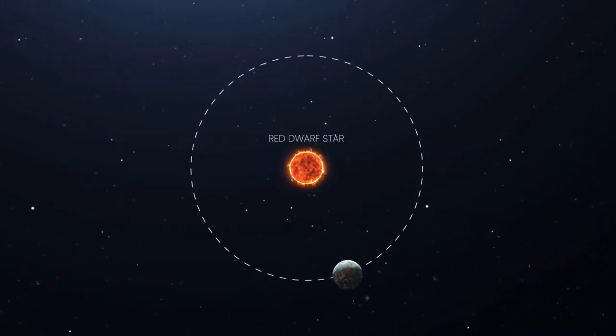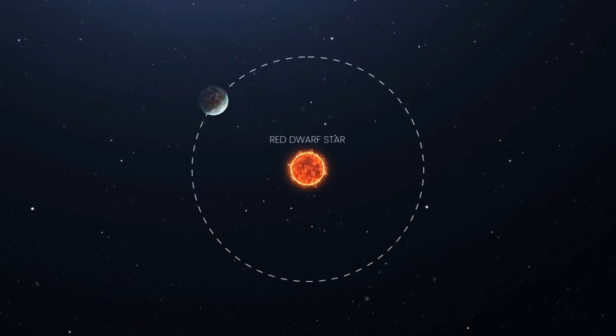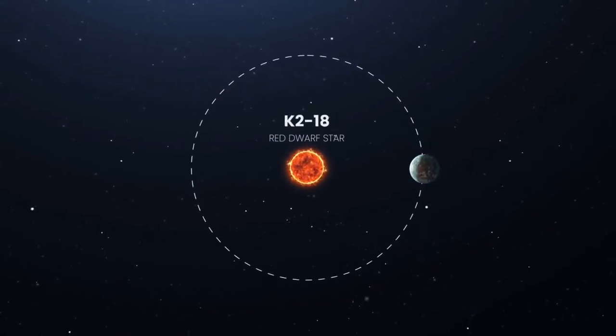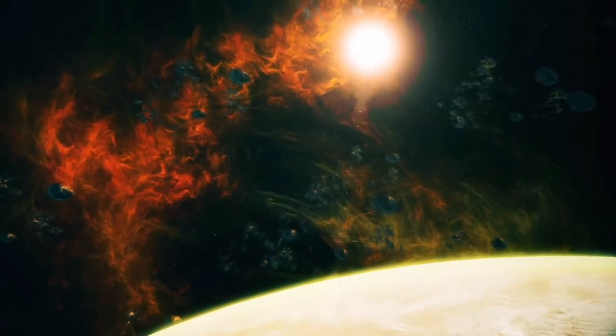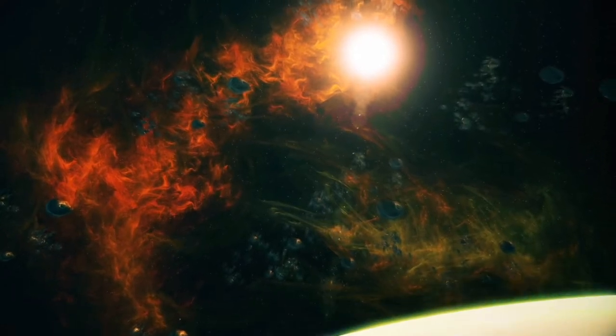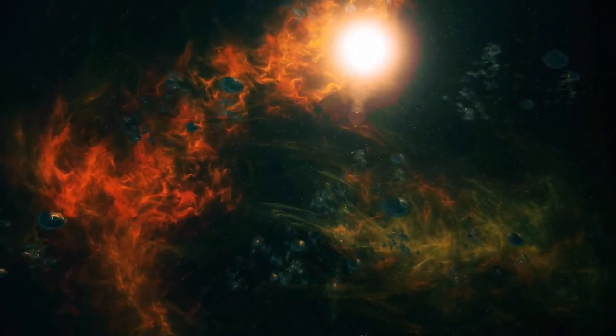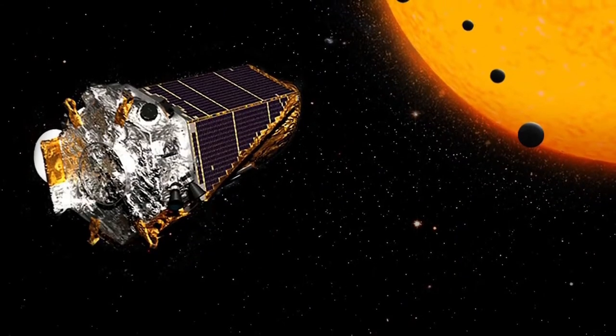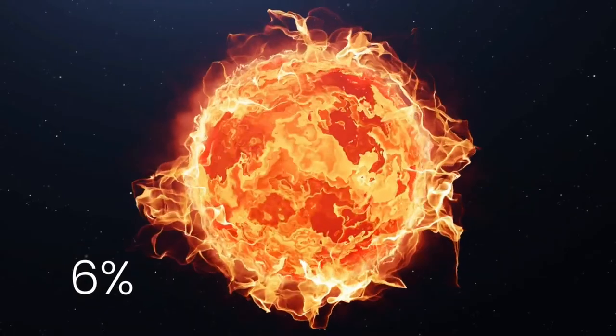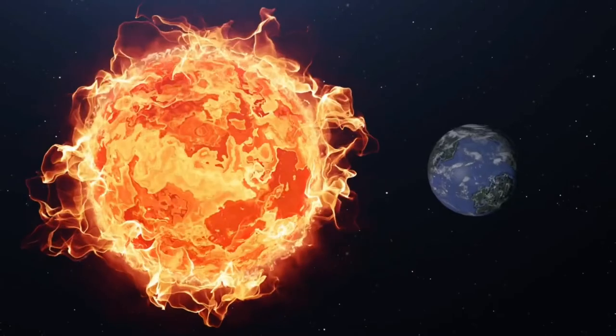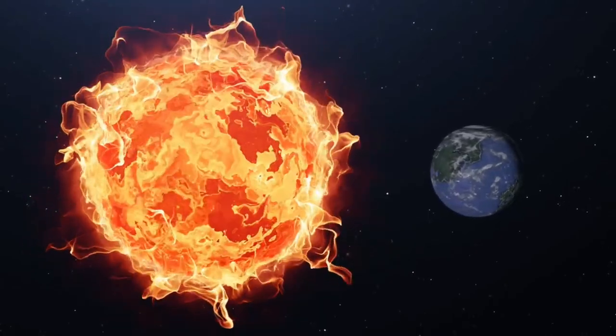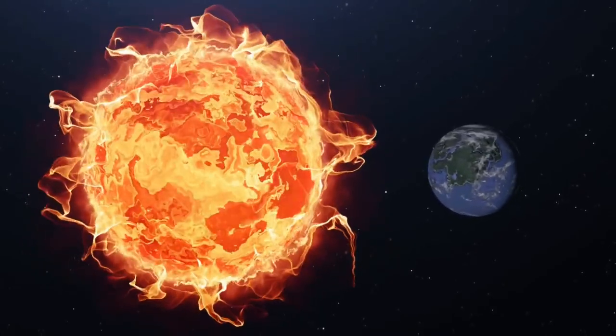It orbits a main sequence red dwarf star called K2-18. A red dwarf star is the smallest, coolest star and by far the most common type of star in the Milky Way. According to Kepler's data, astronomers estimate that six percent of red dwarf stars have an Earth-sized planet in the Goldilocks zone, at least in our neighborhood.